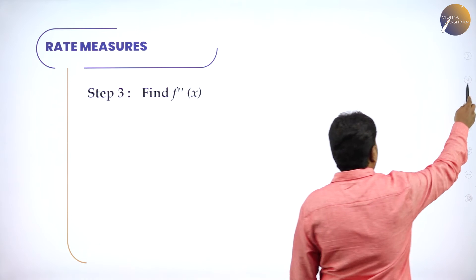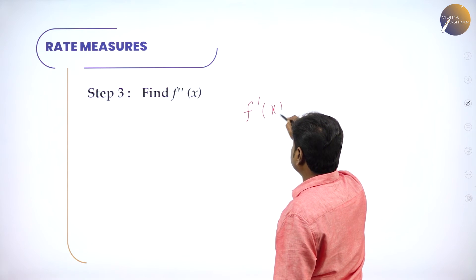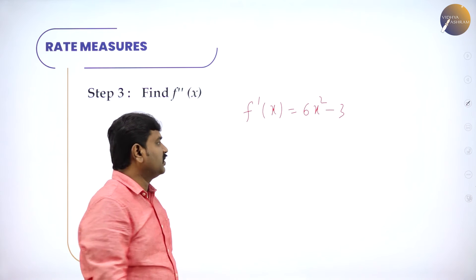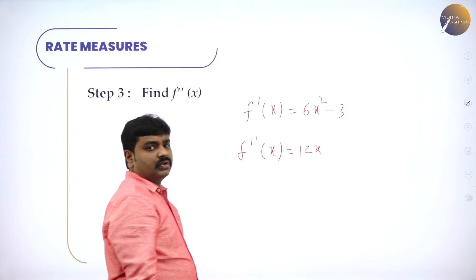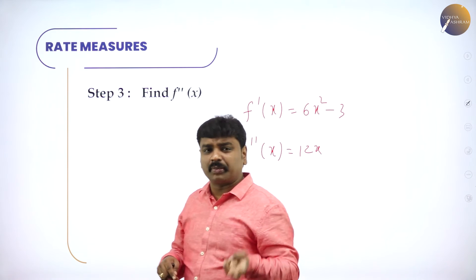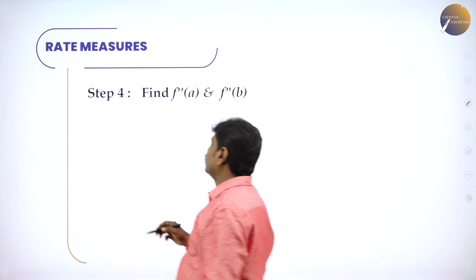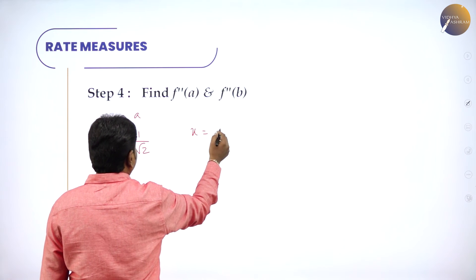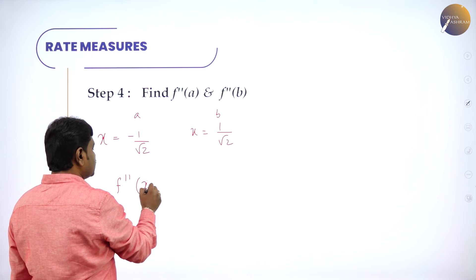When you differentiate one time you got 6x² − 3. Now take that and differentiate again to get f''(x). Differentiating 6x² − 3 gives f''(x) = 12x. Step three is done. Step one: differentiate. Step two: equate to 0, get values x = −1/√2 (call it a) and x = +1/√2 (call it b). Step three: double differentiate to get f''(x) = 12x.